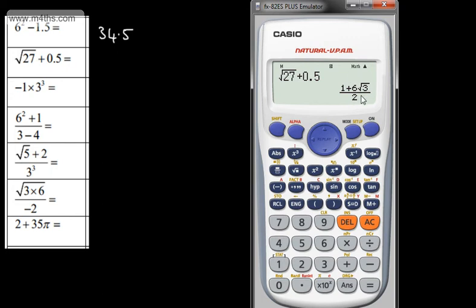Our answer is given as 1 plus 6 root 3 over 2. We press the STD button and we have 5.696 and so on and so forth. So if you were asked to write that down all you do is write the full calculator display and then you might have to round to a certain answer.